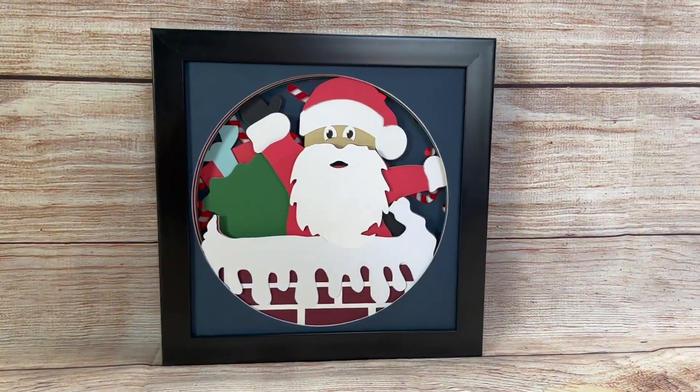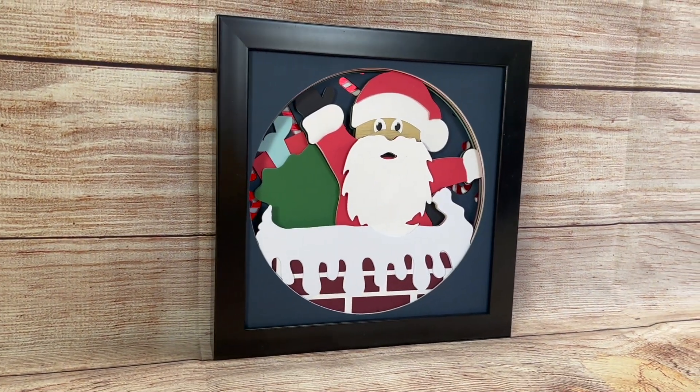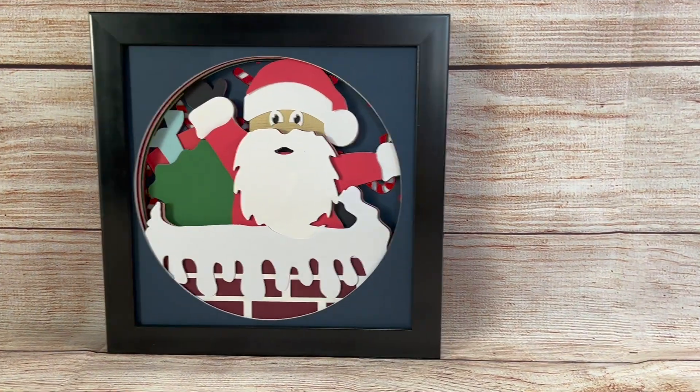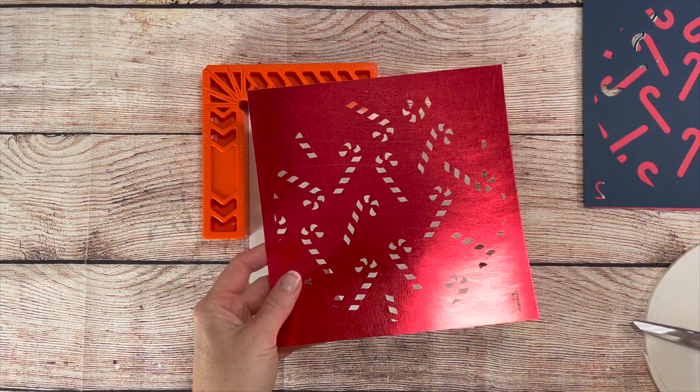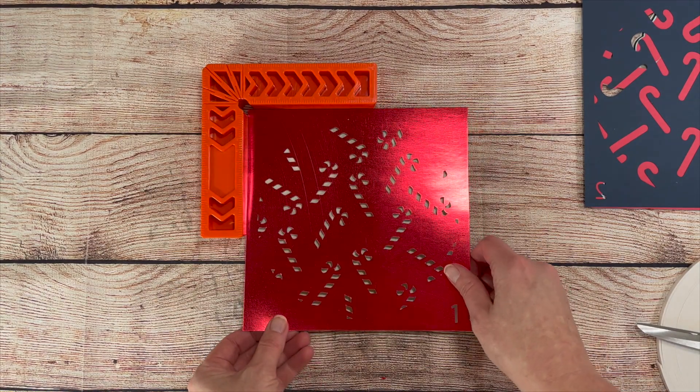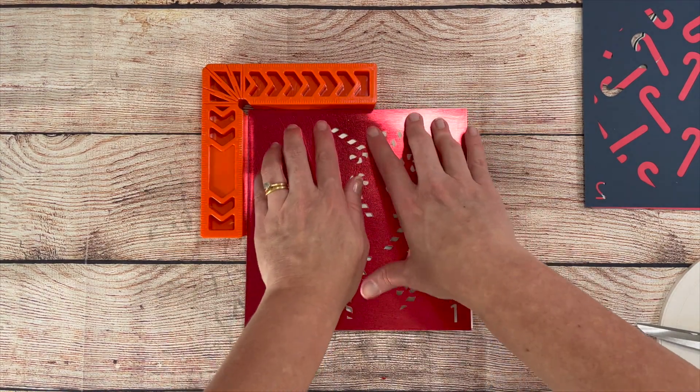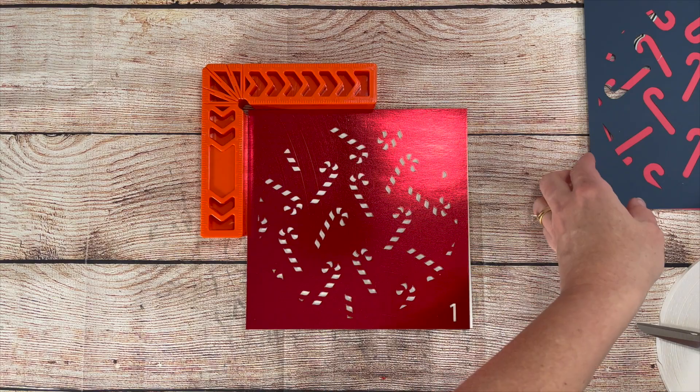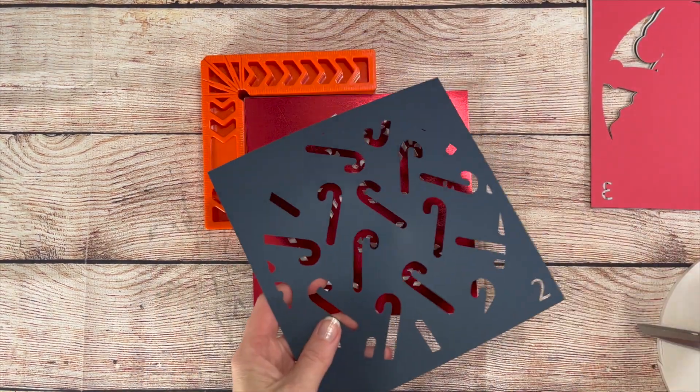Hey everyone, it's Sheena from Crafty Mama Studios here with another 3D shadow box tutorial. Christmas is my absolute favorite holiday, so of course I needed to make Santa in a chimney. I love the candy cane background, and I think the red foil paper gives it just a little something extra.